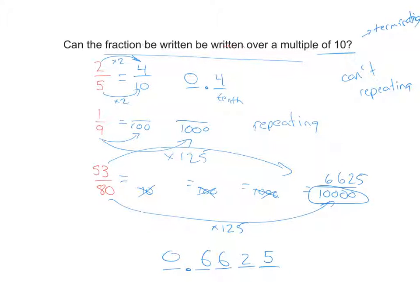So you can see pretty quickly, if you can write a fraction as something out of 10, something out of 100, something out of 1,000, 10,000, 100,000, it is a terminating decimal.